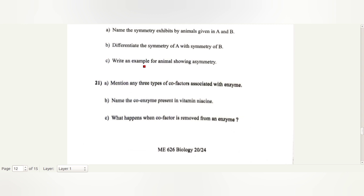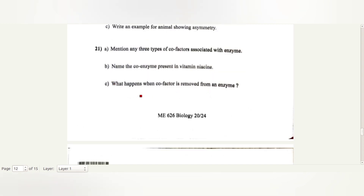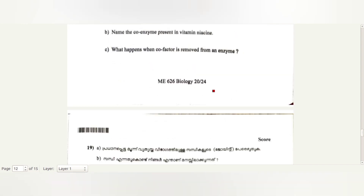Write any example for animals showing asymmetry. Example: sponges. Two factors associated with enzymes: prosthetic group, co-enzyme, and metal ions. Name the co-enzyme present in vitamin — NAD and NADP. What happens when a cofactor is removed from an enzyme? Catalytic activity is lost.